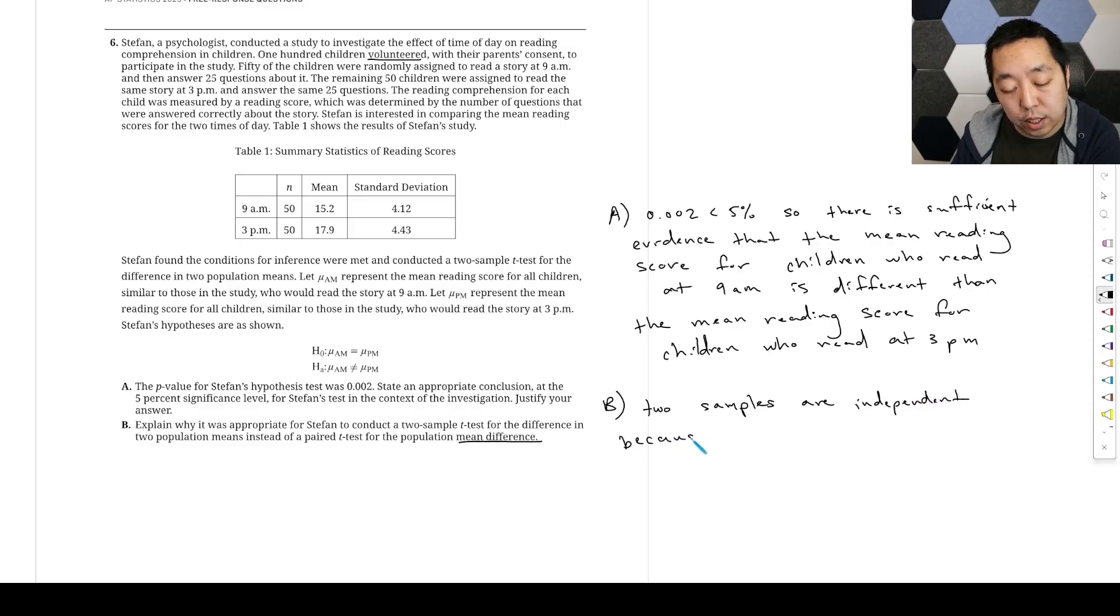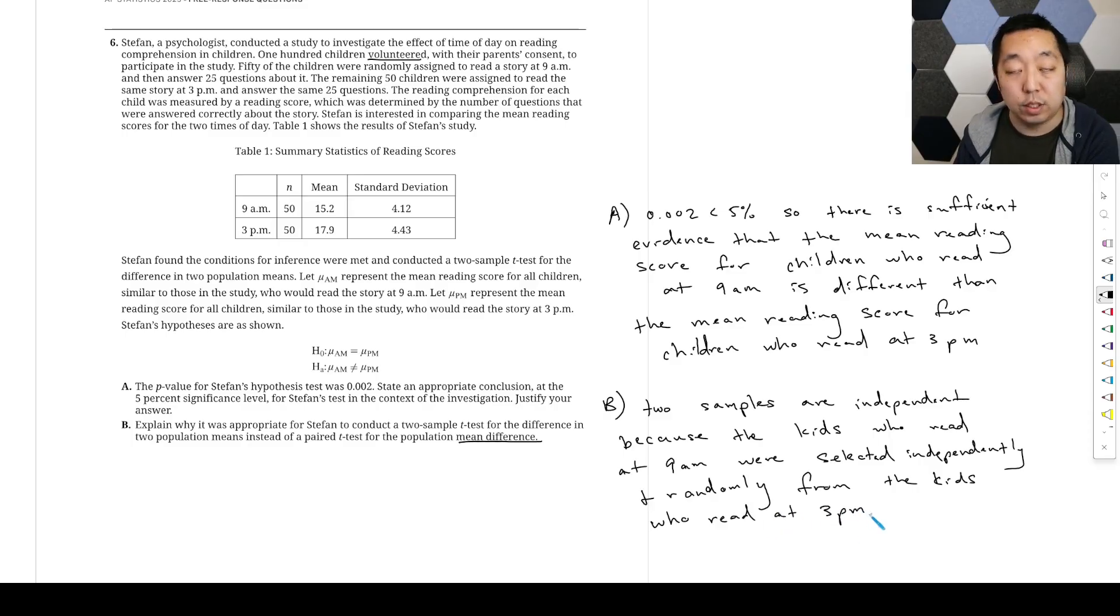Because the kids who read at 9 a.m. were selected independently and randomly from the kids who read at 3 p.m., right? They were separated. There's no connection between the data. There's no pairs of data or anything like that. If you had the same kid read at 9 a.m. and then read at 3 p.m., then that would be different.